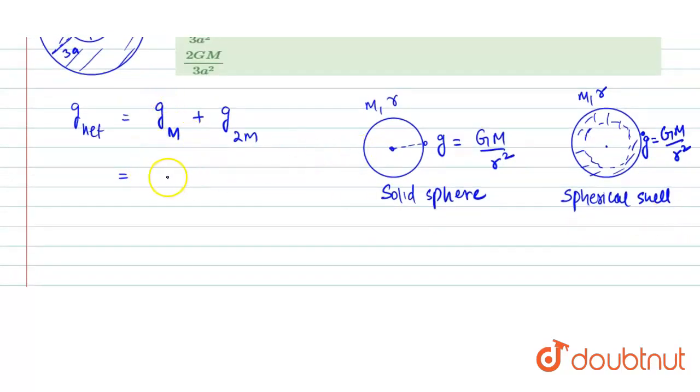Field due to the solid sphere: that would be GM/a². We have to find at a distance 3a from the center, so it would become GM/(3a)².